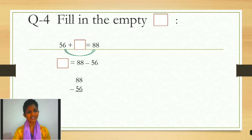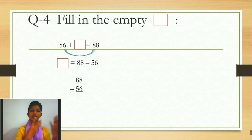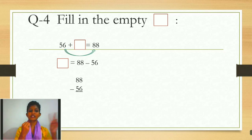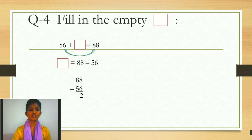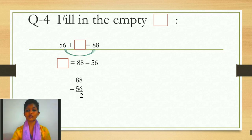Now we can solve this. We will start from the back number. 8 minus 6 — count: 1, 2, 3, 4, 5, 6 — number 2 is left. So we write 2. Now 8 minus 5 — 1, 2, 3, 4, 5 — number 3 is left. So we write 3. This will be your answer: 32.